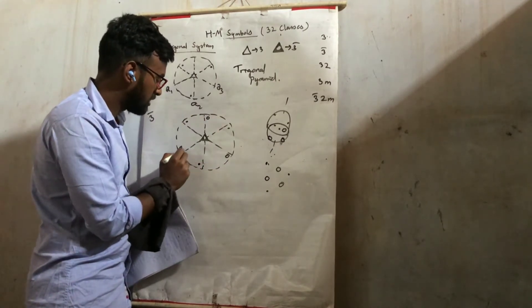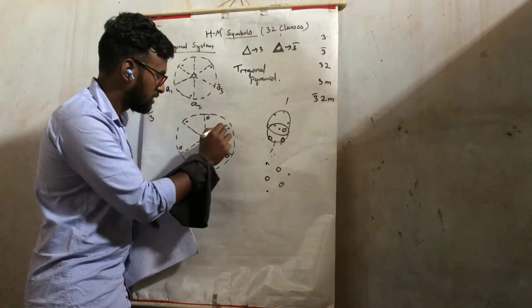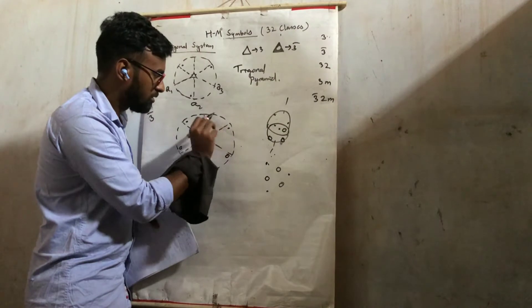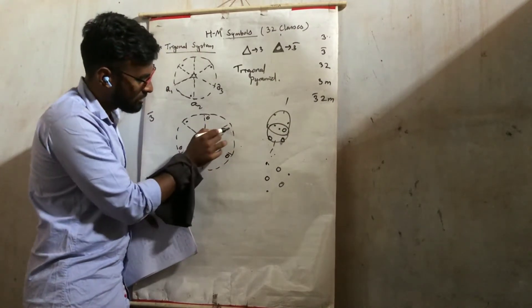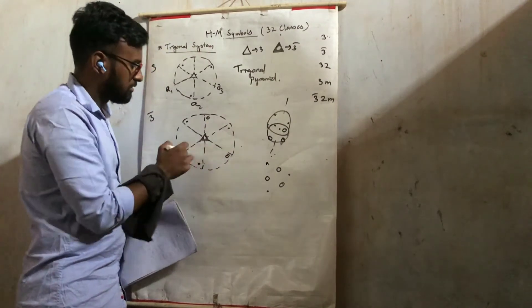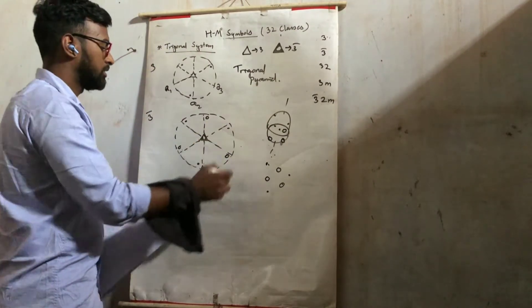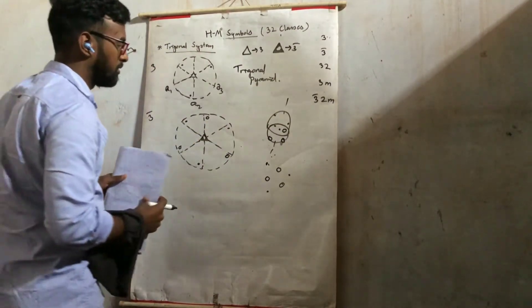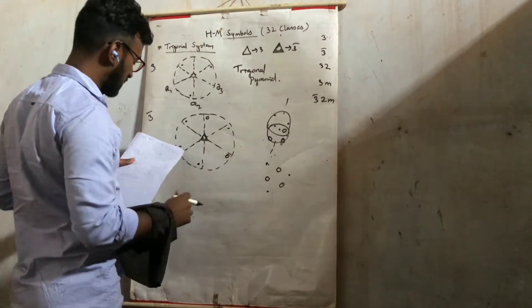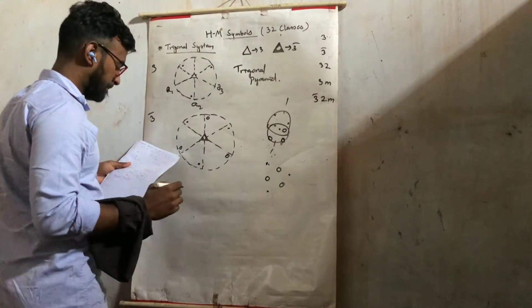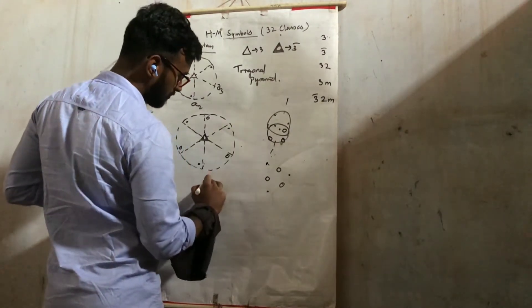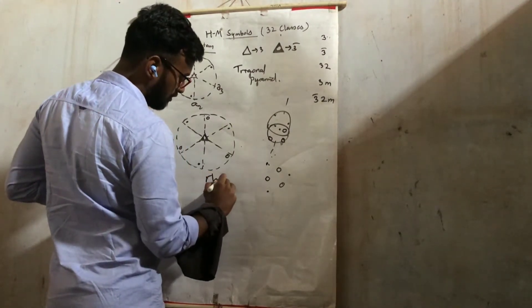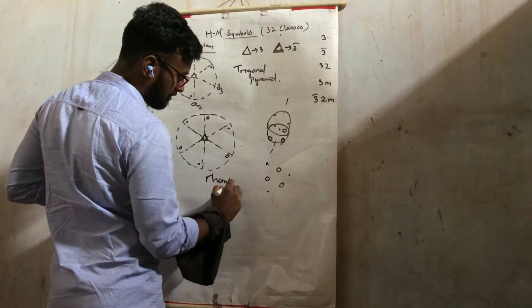Similarly, this circle is having its projection in the opposite — this is on the left side, this is on the right side. So this will be the diagram for 3-bar. And this is known as Rhombohedron.